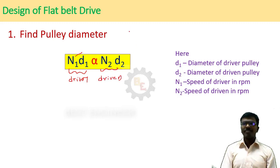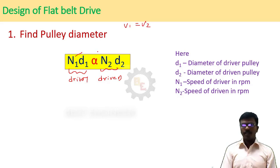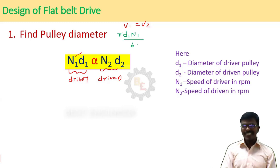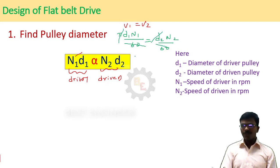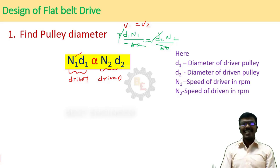How is this formula arrived at? Without slip, the velocity is equal: V1 = V2. Velocity 1 is equal to velocity 2. So, velocity 1 = π·D1·N1/60 = π·D2·N2/60. The 60s cancel, giving D1·N1 = D2·N2. This is the derived formula.